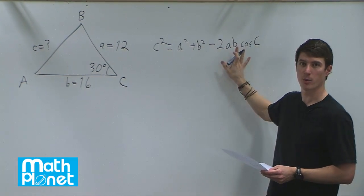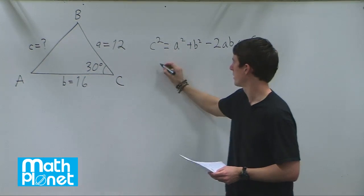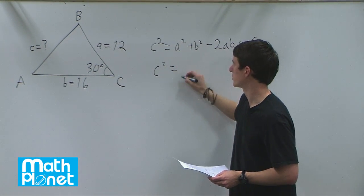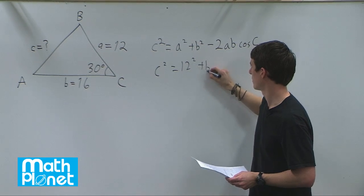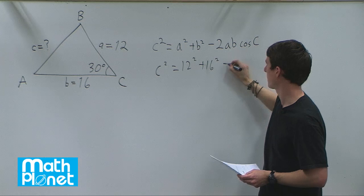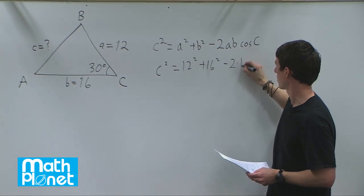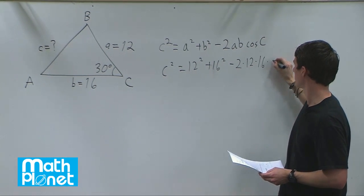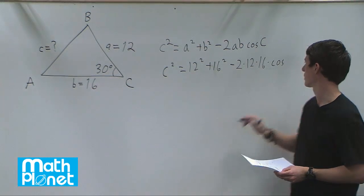So we're going to just plug in what we know here and solve for c. So c squared is equal to 12 squared plus, b is 16 squared minus 2 times 12 times 16 times cosine of 30 degrees.